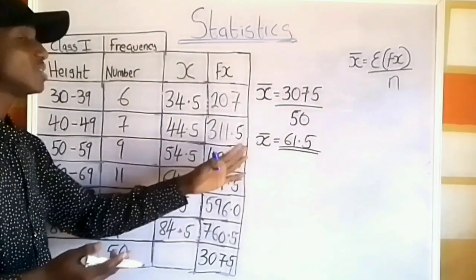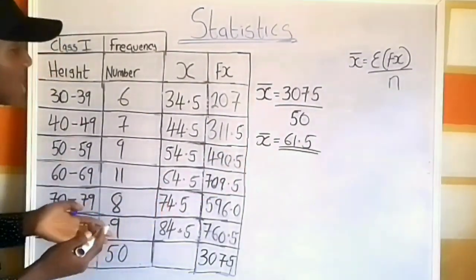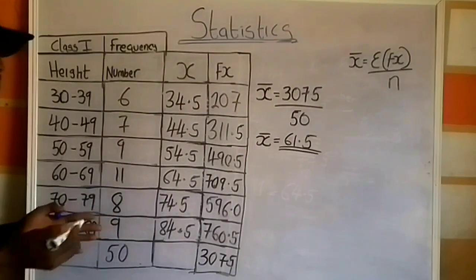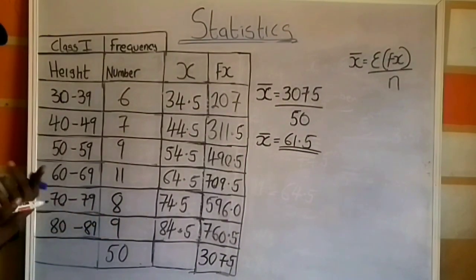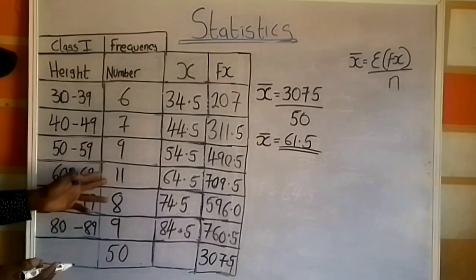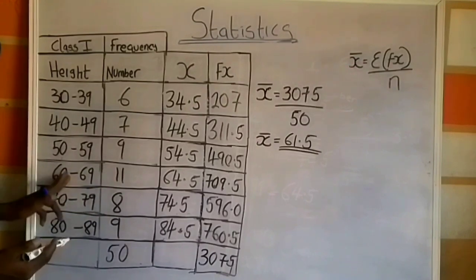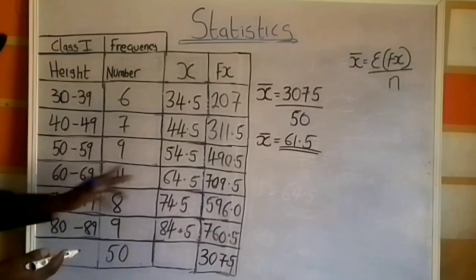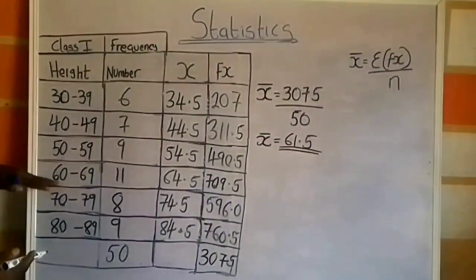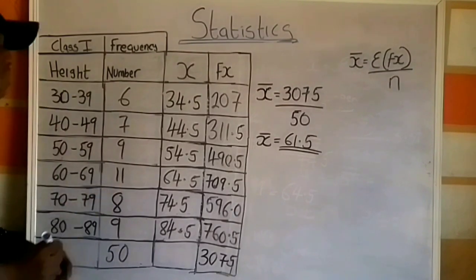Note: if you calculate your mean and it falls between the class interval with the highest frequency, that is a good sign. The highest frequency is 11, belonging to the class interval 60–69, and the mean is 61.5, which falls within that interval. So this answer is correct.